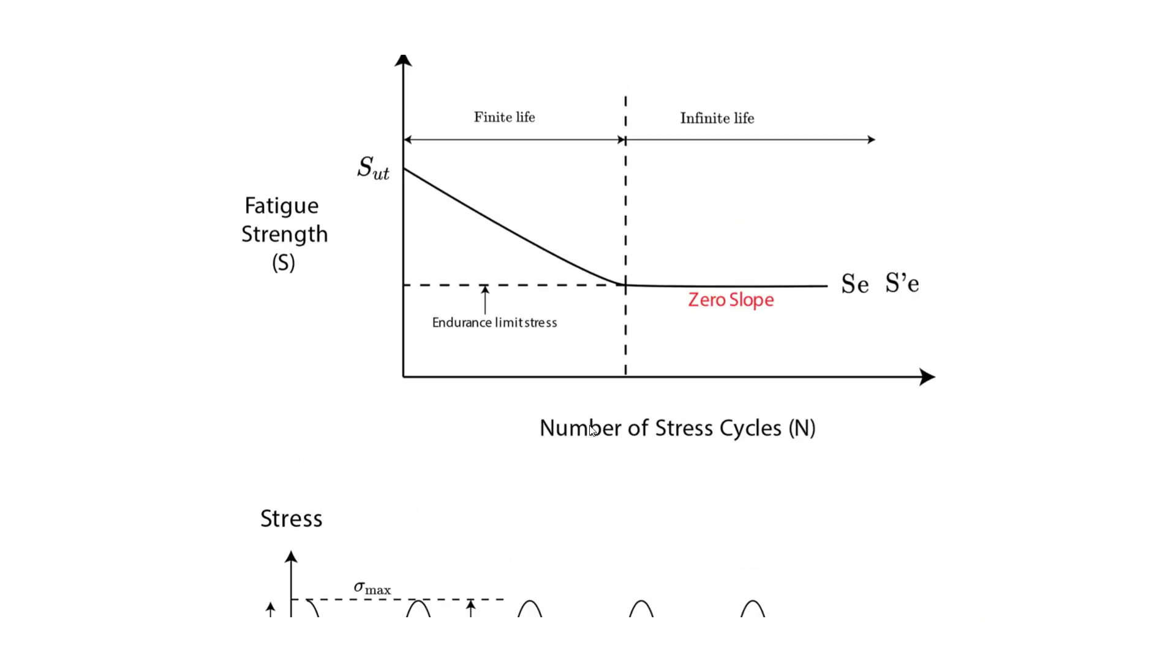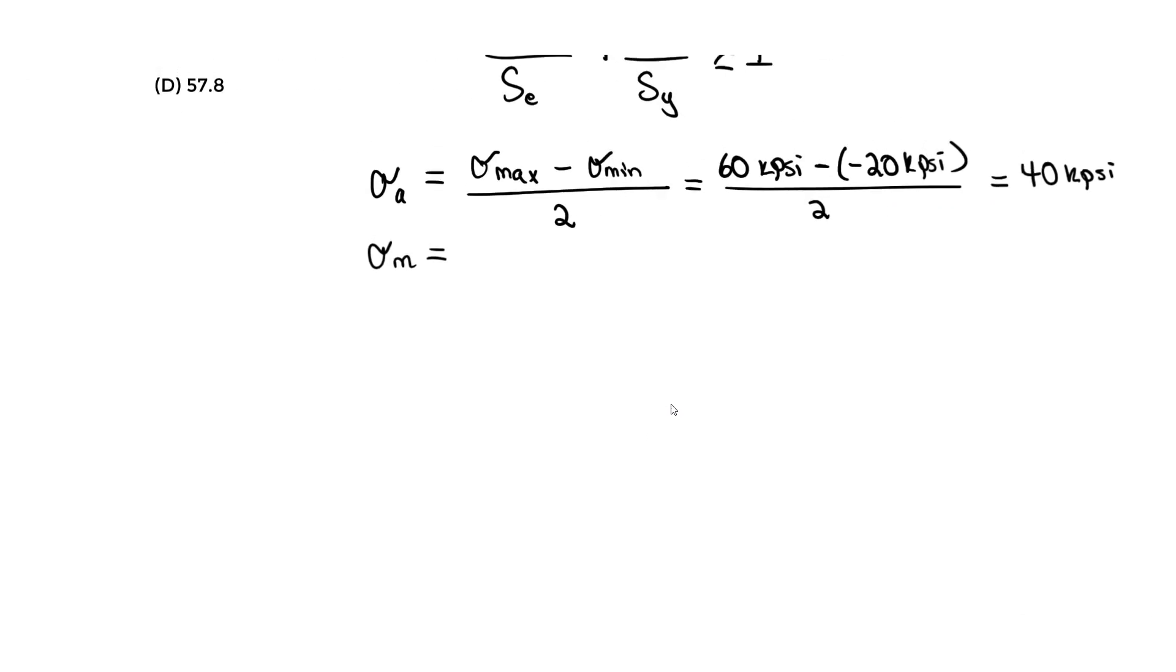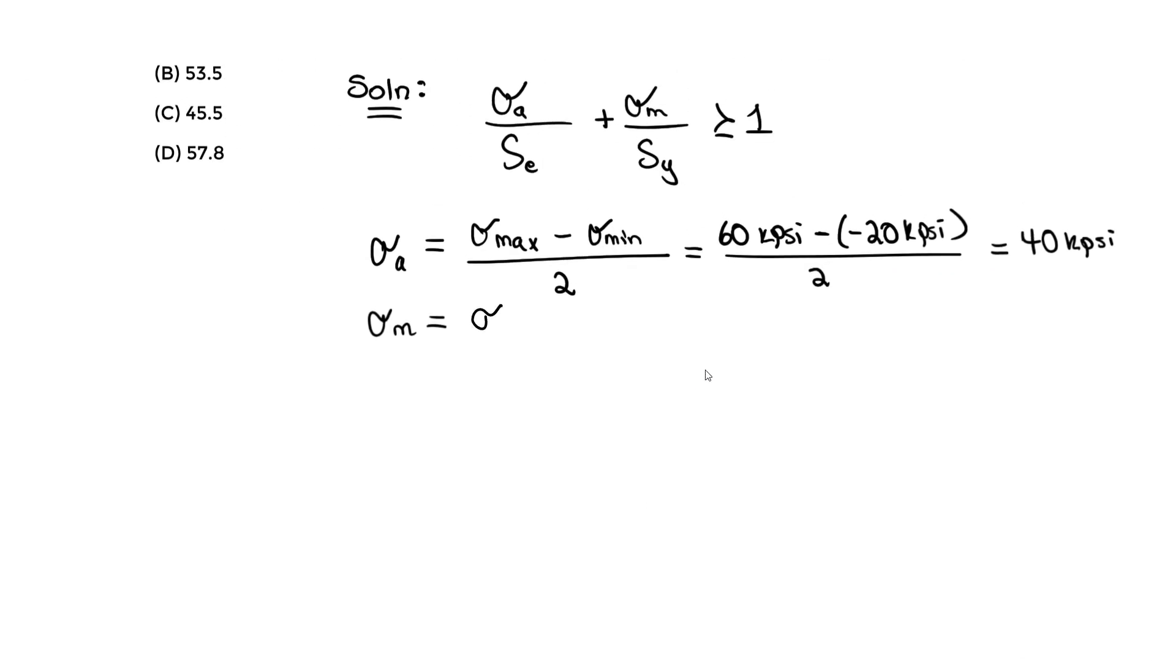So sigma_m equals sigma_max plus sigma_min divided by 2. For the mean you add; for alternating you subtract. So we take 60 kpsi plus negative 20 kpsi, divided by 2, which gives us 20 kpsi.